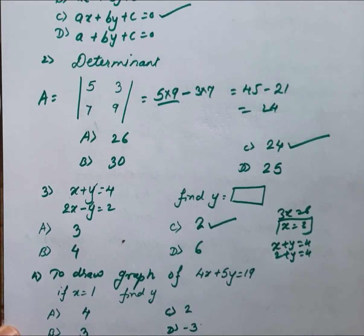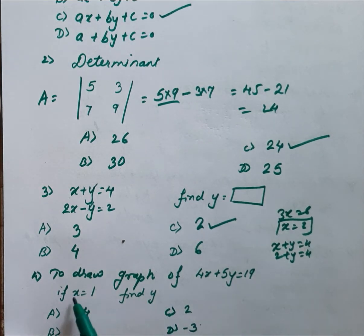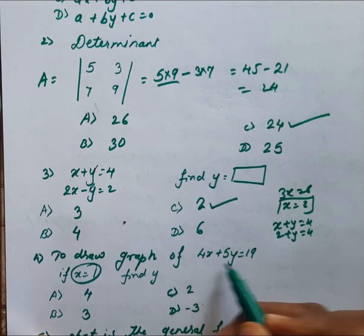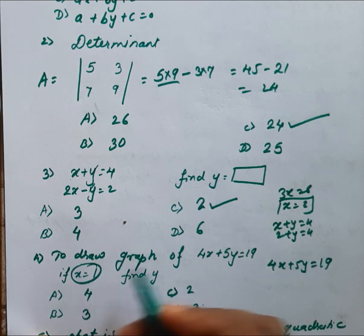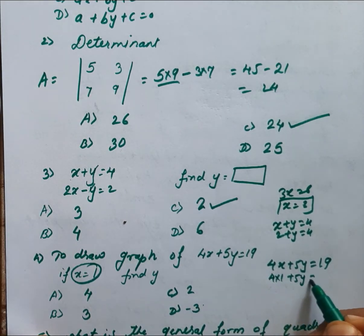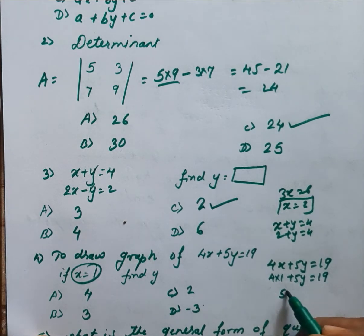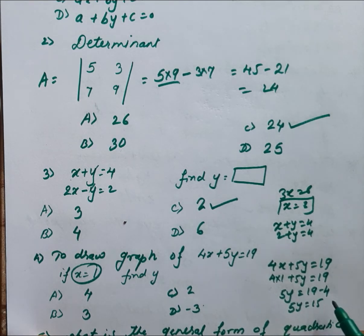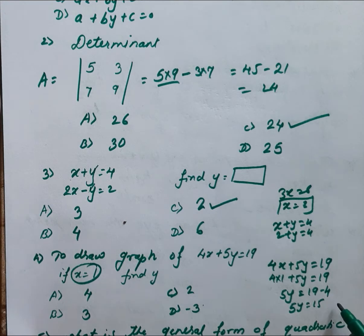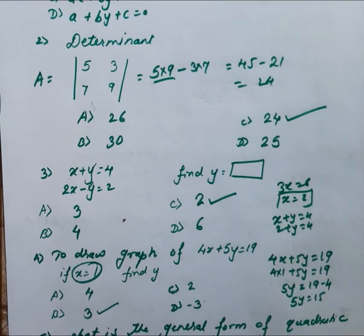Next: to draw the graph of 4X + 5Y = 19, we have to find Y. Substitute X = 1 into the equation: 4(1) + 5Y = 19, so 5Y = 19 − 4 = 15, therefore Y = positive 3. Not negative 3.